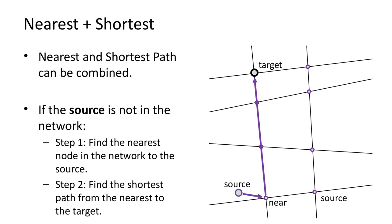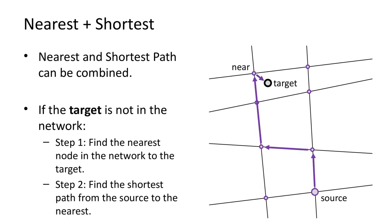Nearest analysis can also be combined with the shortest path analysis. If the source position is not in the network, the nearest analysis can first be used to find the nearest position to the source. Similarly, if the target position is not in the network, the nearest analysis can be used to find the nearest position to the target.